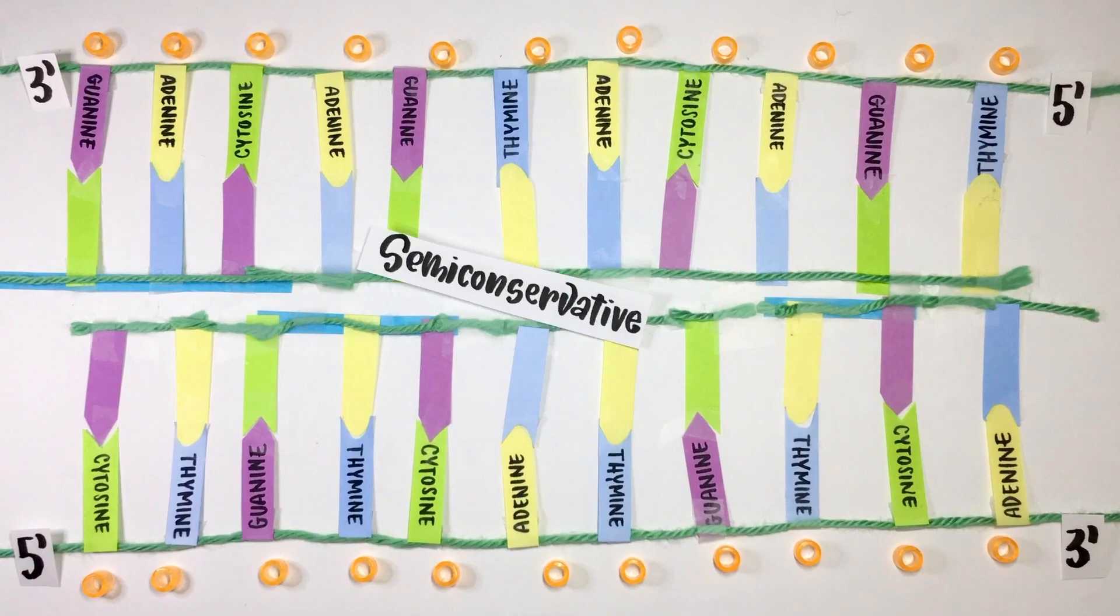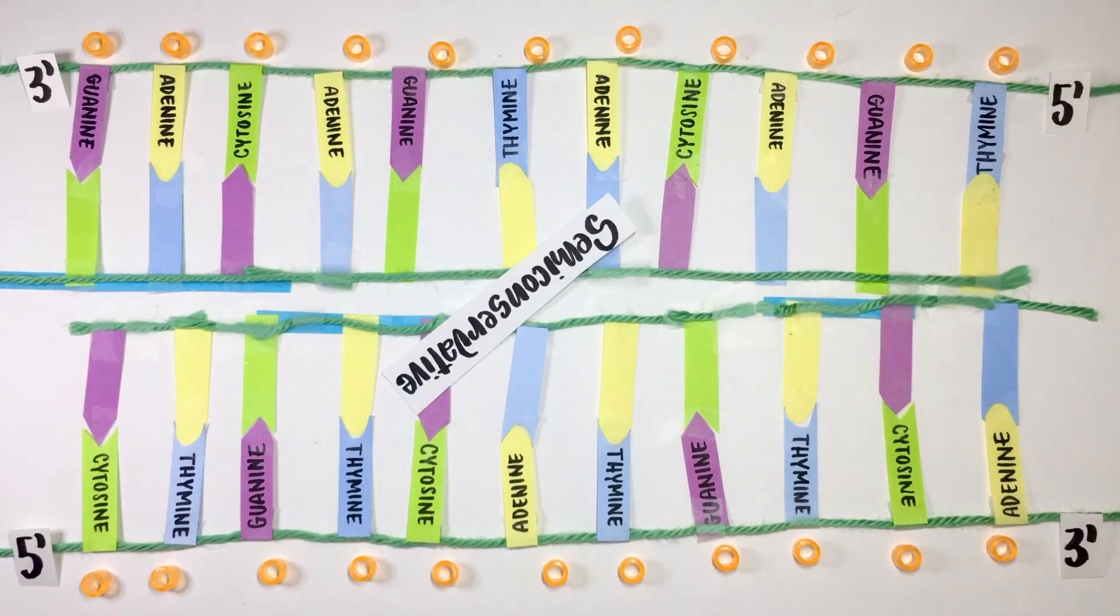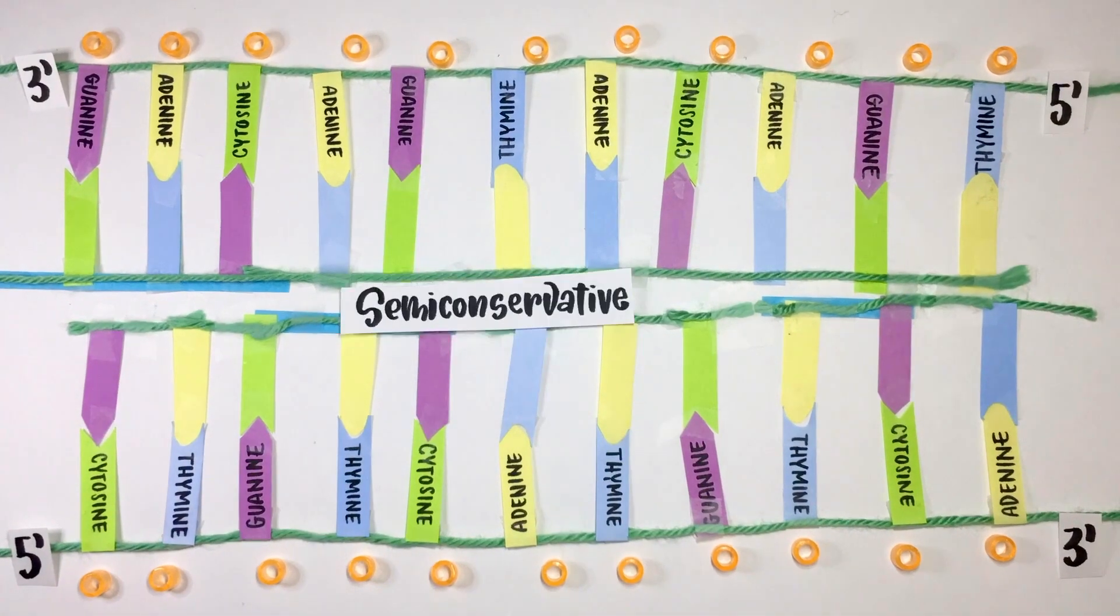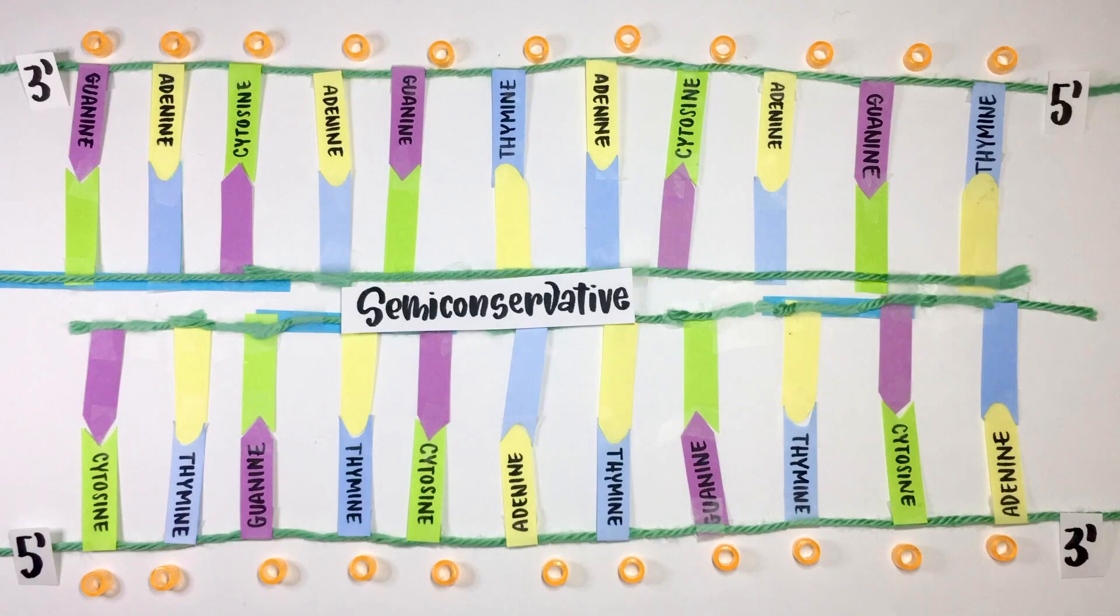One final thing to note is that DNA replication is semi-conservative, meaning that the duplicated DNA has one original strand and one new strand. This mechanism is important because it minimizes the errors that may occur during replication.